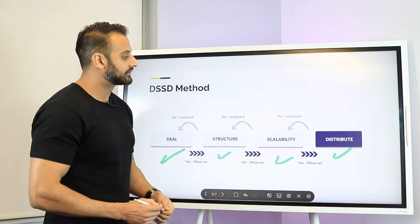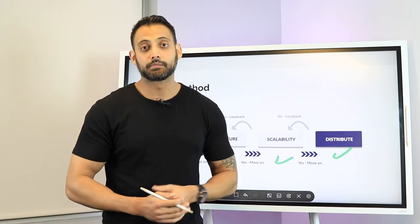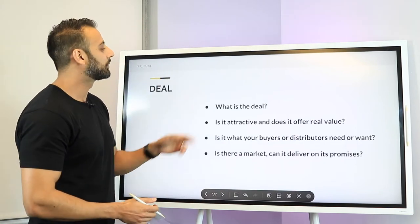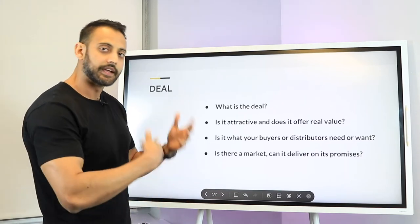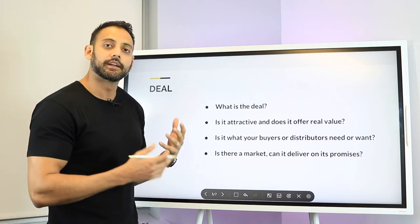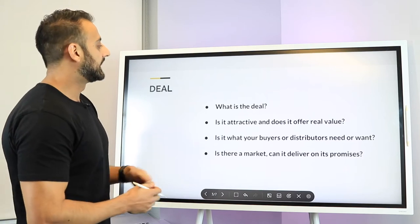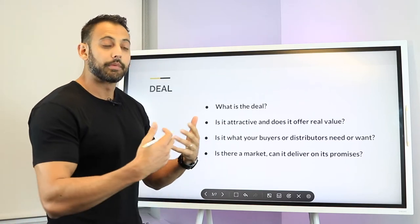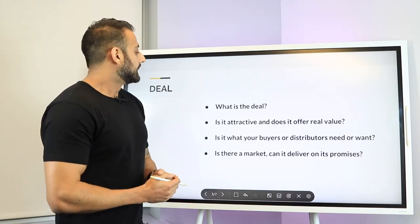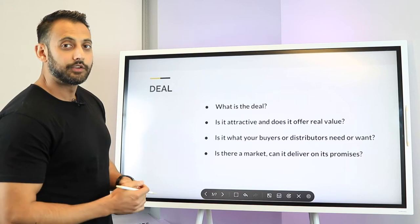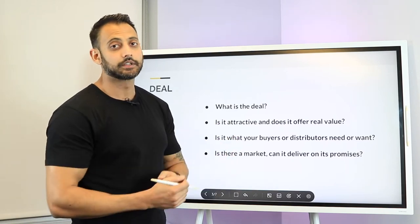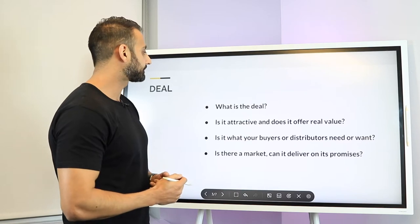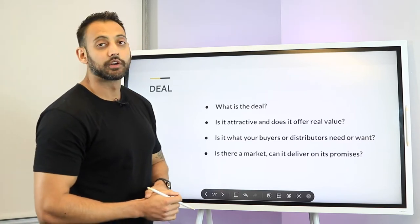Let me show you how I did this with my company, USPI — my private equity business that focuses on parking lots, US Parking Investments. So what was the deal? That's the first thing you look at. I'll go through the questions first and then give the case study. What is the deal? What are you trying to sell? What is your concept? Is it attractive and does it offer someone real value? Is it what your buyers — and importantly your distributors — need or want? Do the people trying to have sell this for you need it? You've got to take into consideration both your end user customers and your distributors.